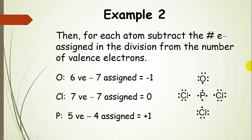Oxygen has a non-zero formal charge — a little extra electron density. For chlorine: each chlorine has three lone pairs plus one from the bond division, giving seven assigned. Chlorine has seven valence electrons, so its formal charge is zero. For phosphorus: phosphorus has five valence electrons but only receives four in the assignment, so its formal charge is plus one — it has a little less electron density than would be ideal.